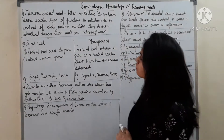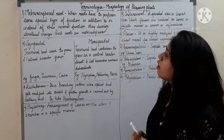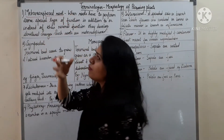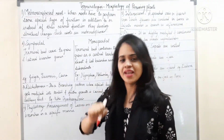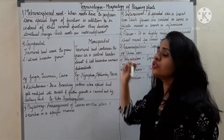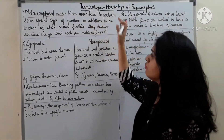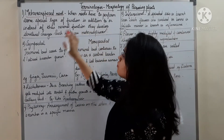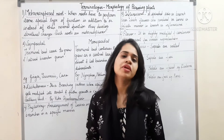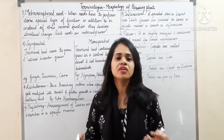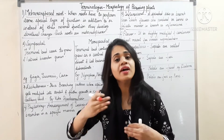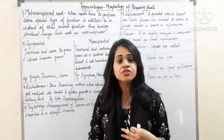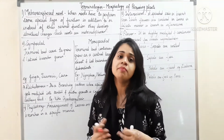The first definition we are going to study is the metamorphosed root. What is a metamorphosed root? When roots have to perform some special type of function in addition to, or instead of, their normal function, they develop structural changes. The normal work of roots is absorption of water and minerals. But when they perform certain functions like storage or support, we call those as metamorphosed roots.